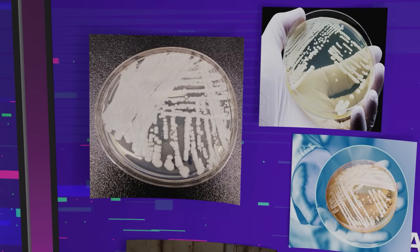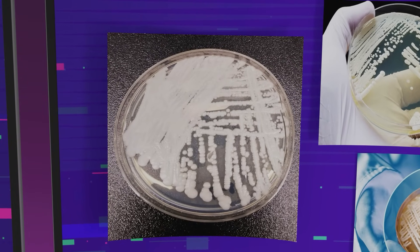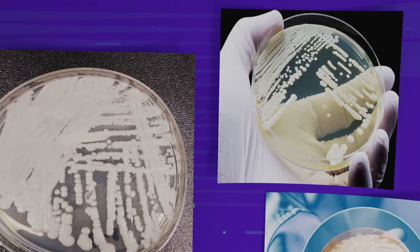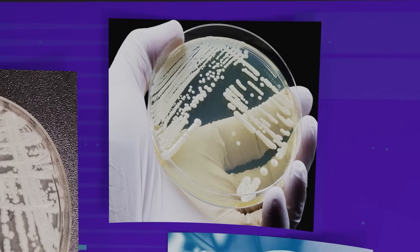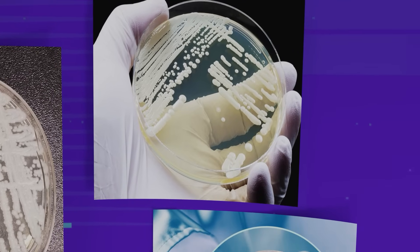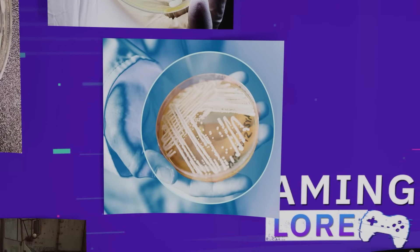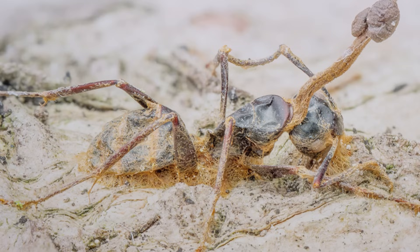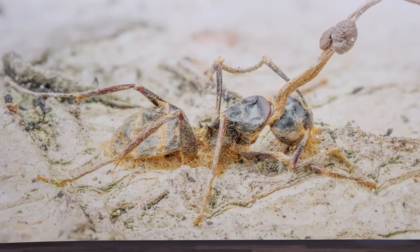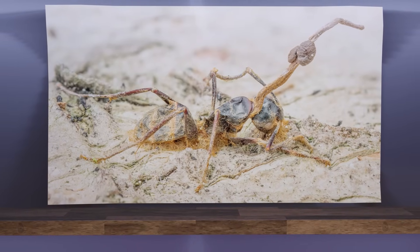Despite these limitations, recent studies in mycology show fungi are adapting. Species like Candida auris — a deadly fungal infection in hospitals — have evolved to survive warmer temperatures. Climate change, by increasing global temperatures, is accelerating fungal adaptation. Fungi that once could not survive in human bodies are getting closer to bridging that gap. Cordyceps, for now, is a threat limited to insects. But evolution, given the right pressures and enough time, has a way of finding new paths.